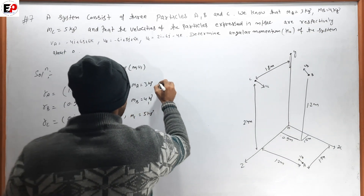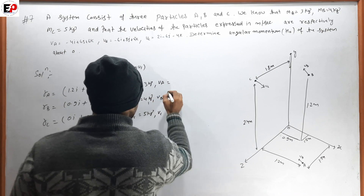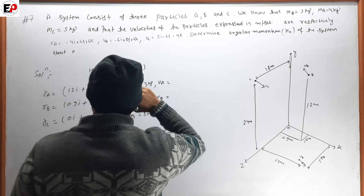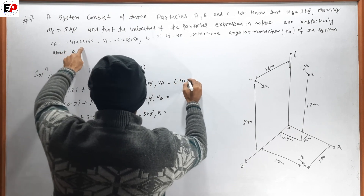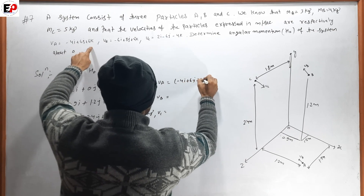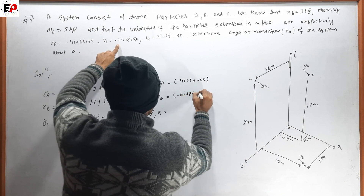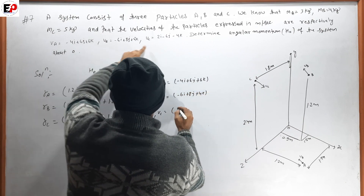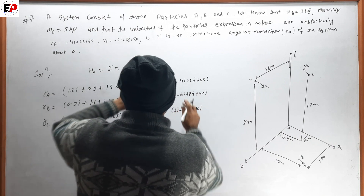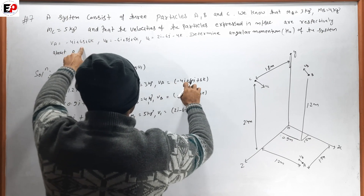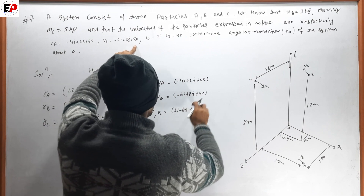Loading velocities: VA = 4i + 6j + 6k, VB = -6i + 8j + 4k, VC = 2i - 6j - 4k.